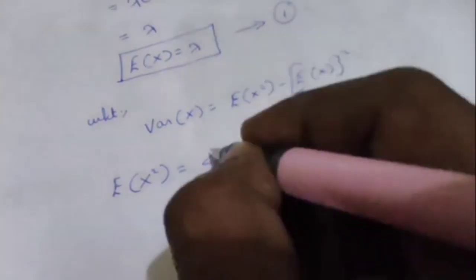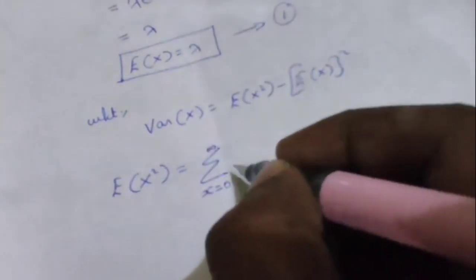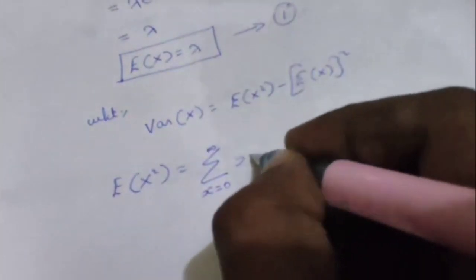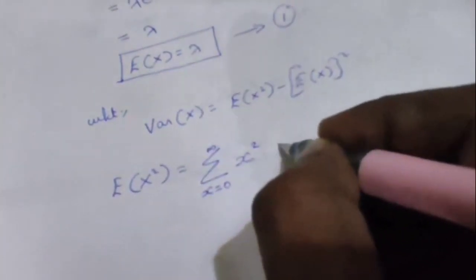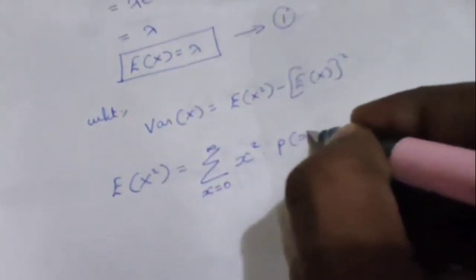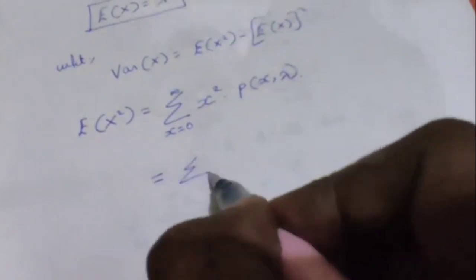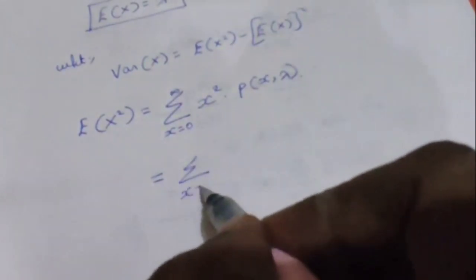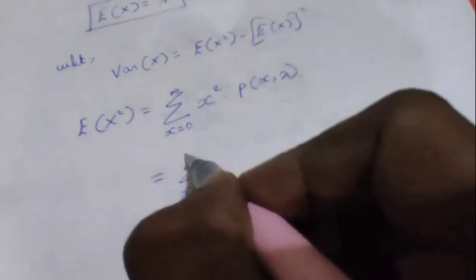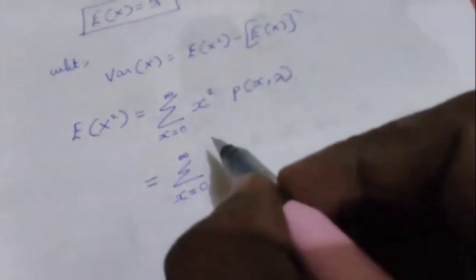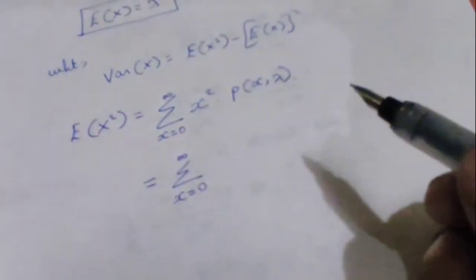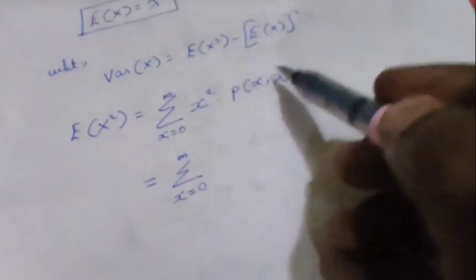E of x squared equals summation from x equals 0 to infinity of x squared times p of x, substituting the Poisson PMF: summation from x equals 0 to infinity of x squared times e to the power minus lambda times lambda to the power x divided by x factorial.